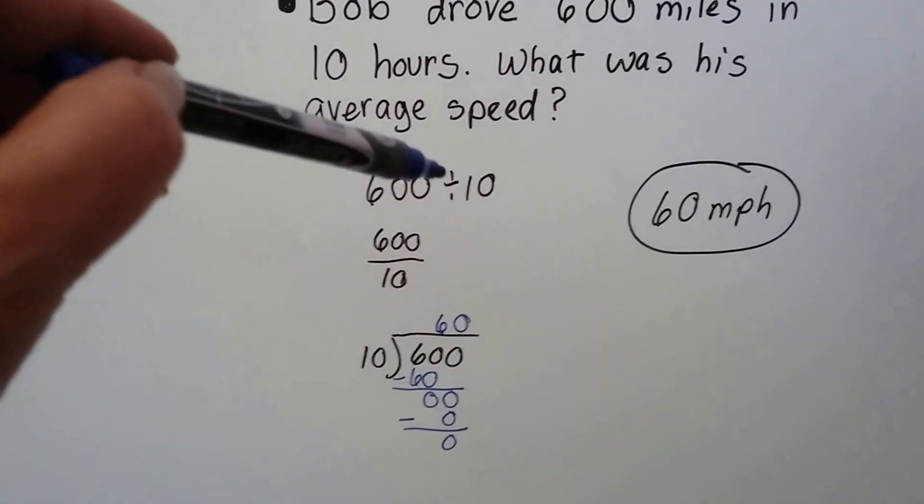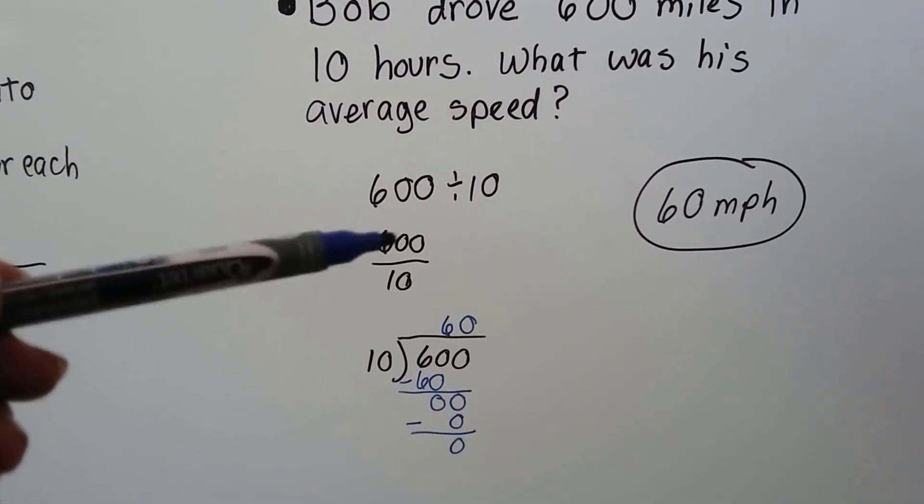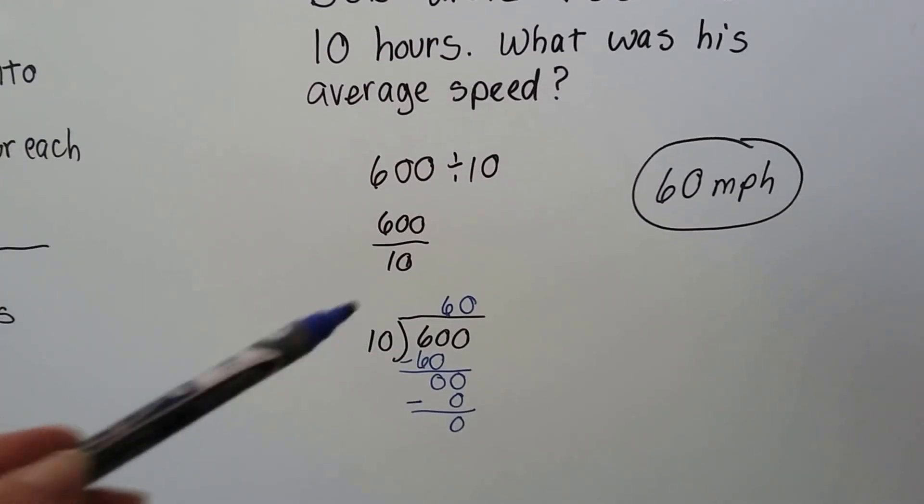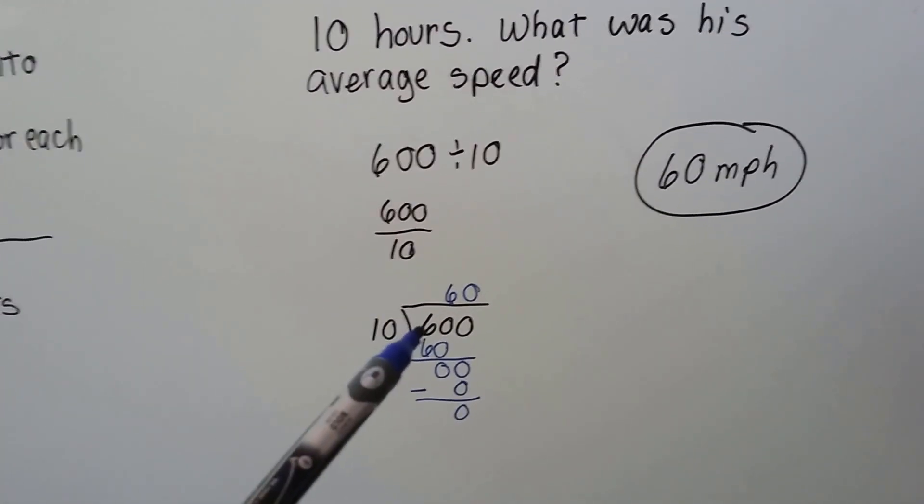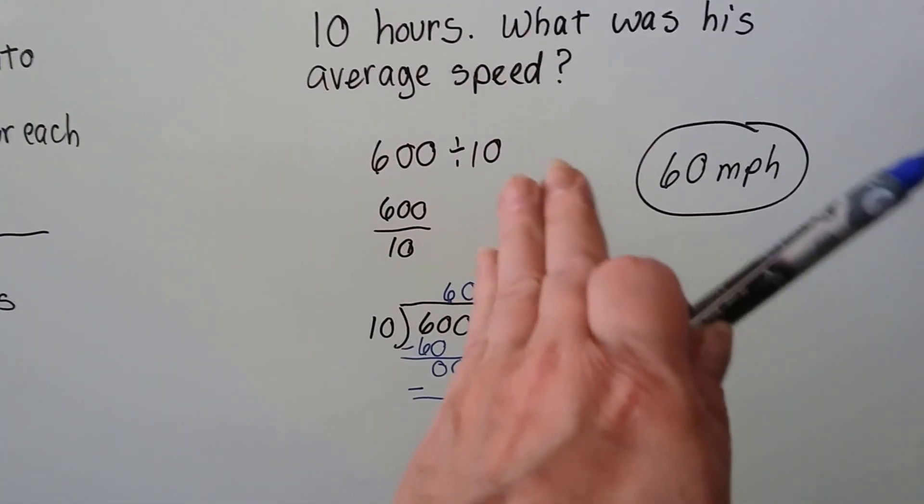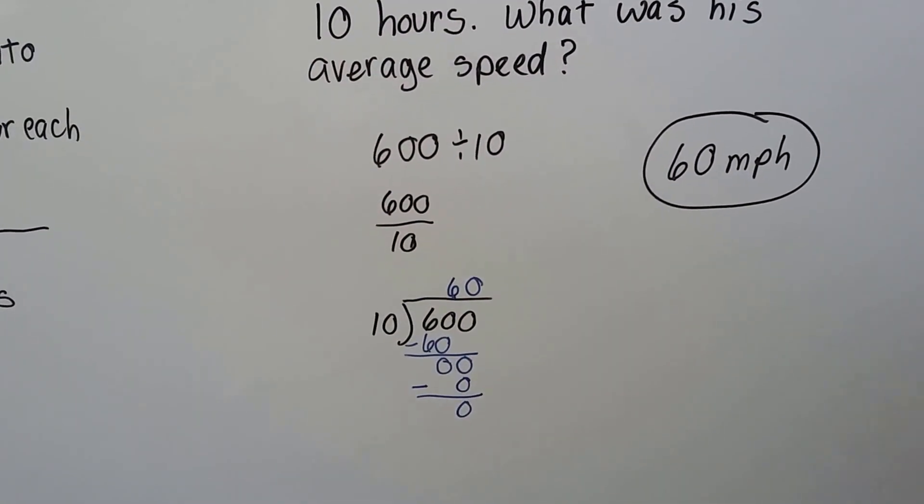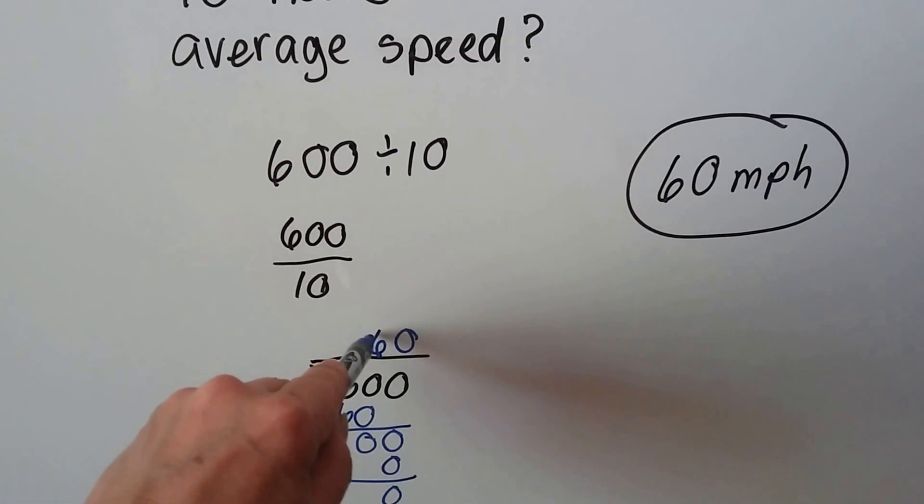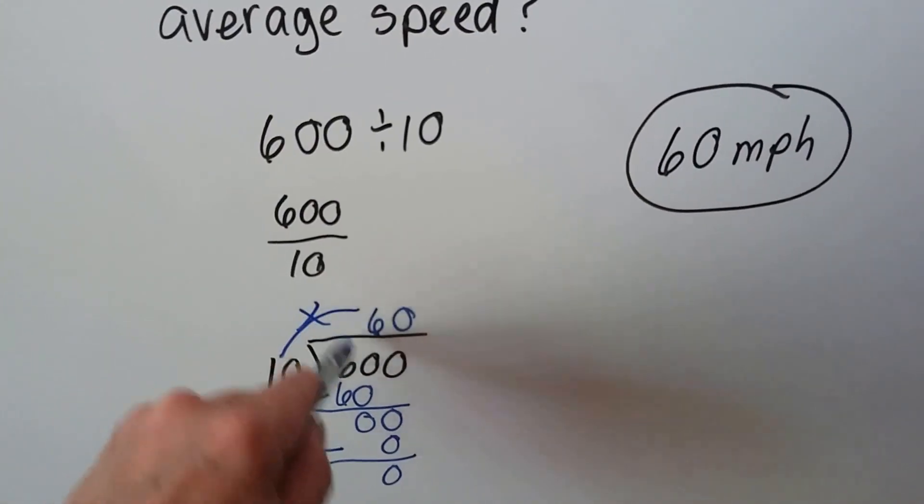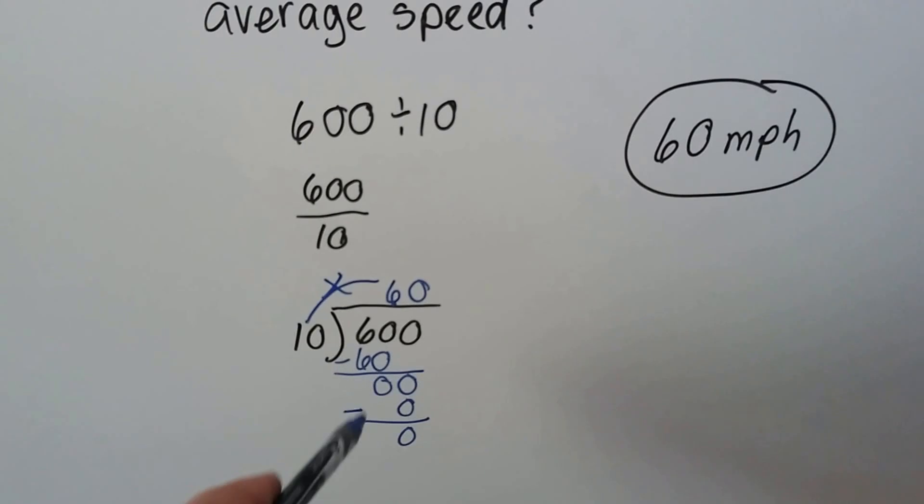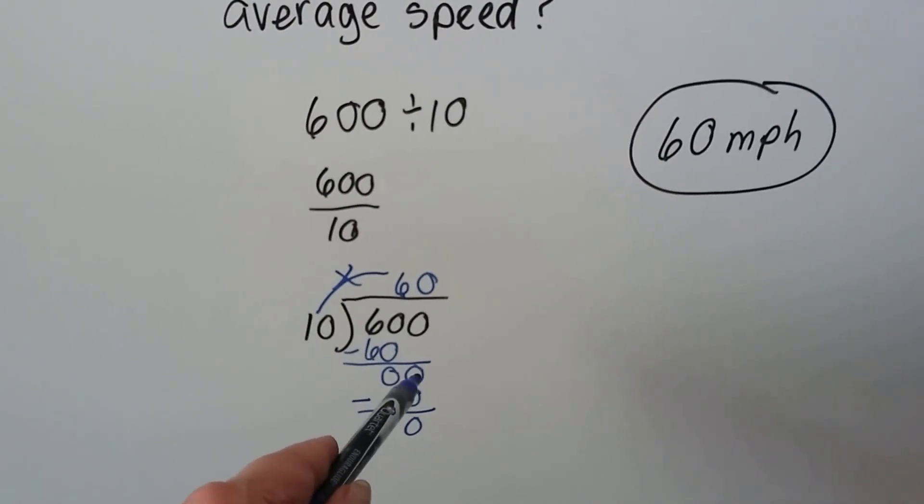We could do 600 divided by 10 written like this. We could do it as a fraction like this. We could do it long division. 10 can't go into 6, but it can go into 60, can't it? 6 times. And 10 times 6 is 60. So we can do this multiplication. We write our 60 here. We do our subtraction and get a 0, 0.